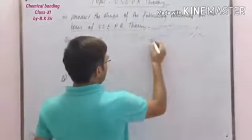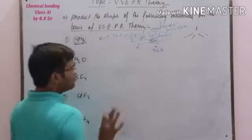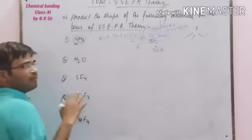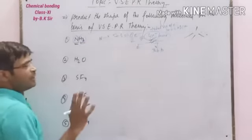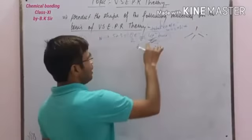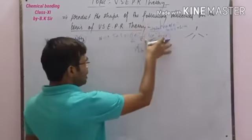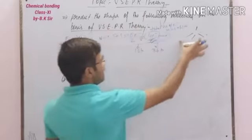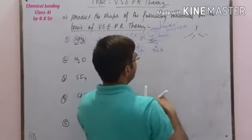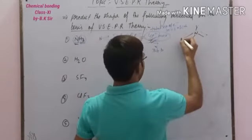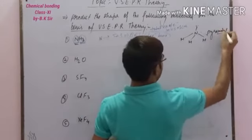But out of 4 electron pairs, there are only 3 bond pairs. The number of bond pairs equals the number of peripheral atoms, so there are 3 bond pairs and 1 lone pair. So total electron pairs are 4, geometry is tetrahedral, but there is 1 lone pair. We place nitrogen in the center with the peripheral hydrogen atoms, and the actual geometry will be pyramidal.